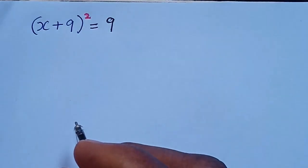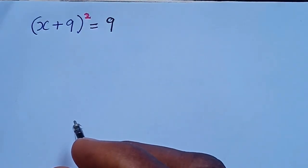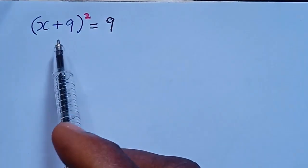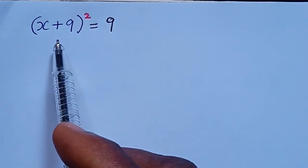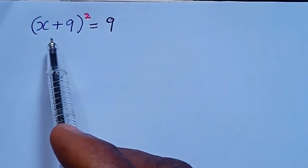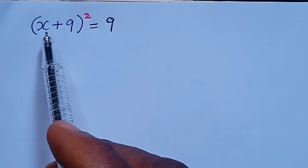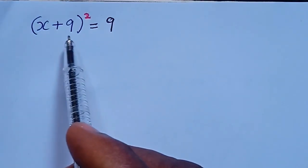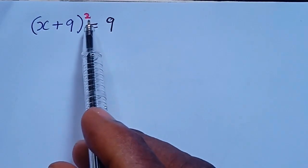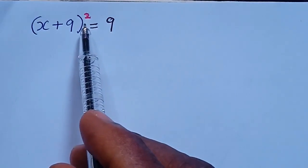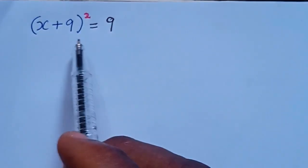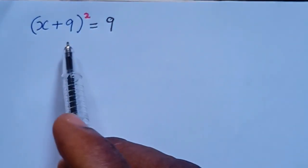Hi everyone, welcome to yet another exciting lesson. As you can see at your view here, we have this nice expression. We have into bracket x plus 9, close the bracket, raised to the power of 2, equal to 9. How do we solve for x?